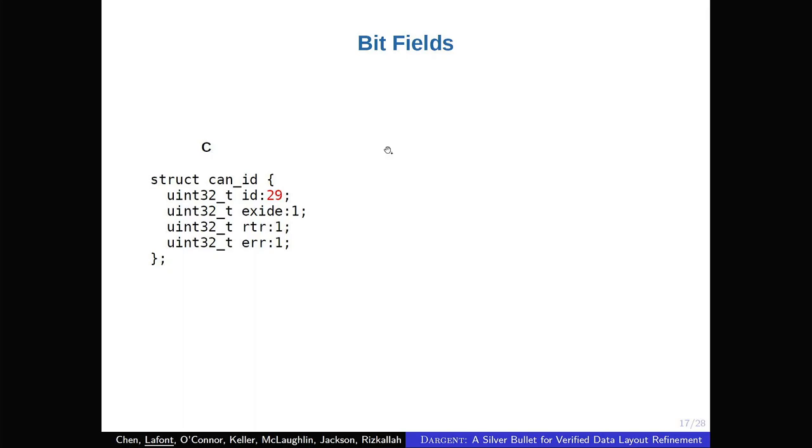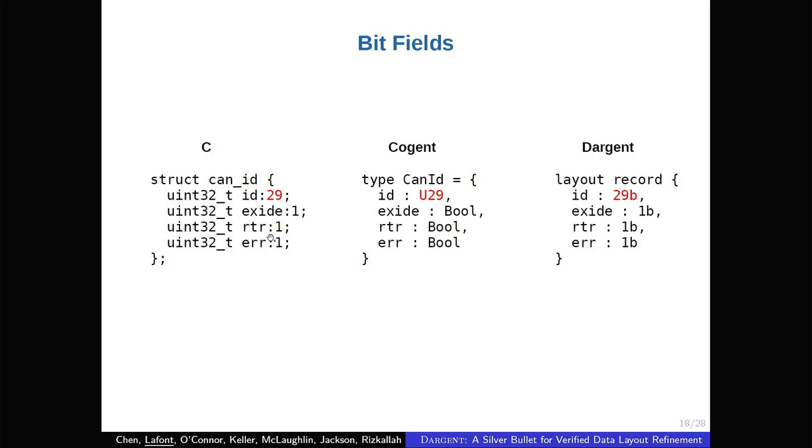With that we also support bit fields. So here's an example from a driver for a CAN controller. This is a C structure with four fields. The first one is only on 29 bits and it's followed by three booleans. In Cogent, we have extended Cogent to handle this kind of specific format. Namely we have introduced these new primitive types, for example U29. So it means that it's an integer that fits on 29 bits. So now you can represent this kind of structure with Dargent.